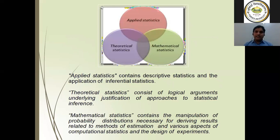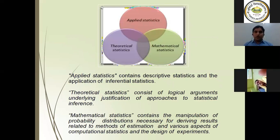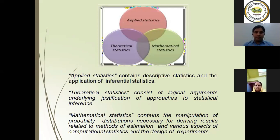Applied statistics is a descriptive type of statistics. Theoretical statistics means all concepts are related to logical arguments — this is the theoretical portion. Mathematical statistics contains manipulations of probability distributions. A most important example of mathematical statistics is the design of experiments. These topics were already covered in my previous class, and design of experiments is also called experimental design.